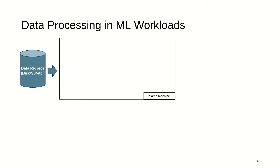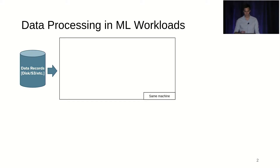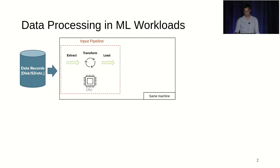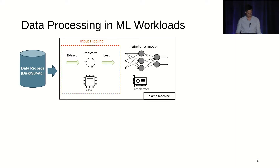Before I start talking about CacheU, I want to take a step back and look at what data pre-processing in ML workloads traditionally looks like. Your data is generally stored in a local disk or an object storage, and then your input pipeline comes in and applies an ETL-like process on it that runs on the CPU. This is an iterative process that produces batches, which are then ultimately given to your model, which trains on an accelerator such as a GPU or a TPU.